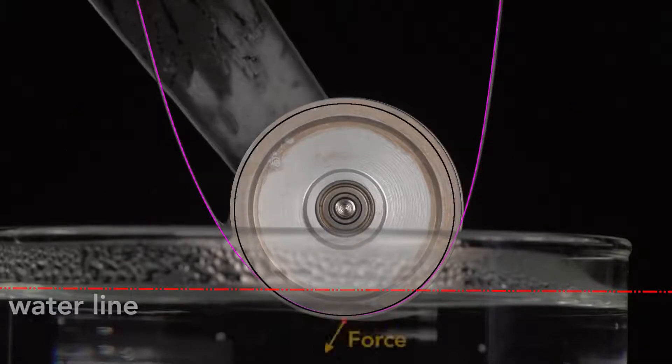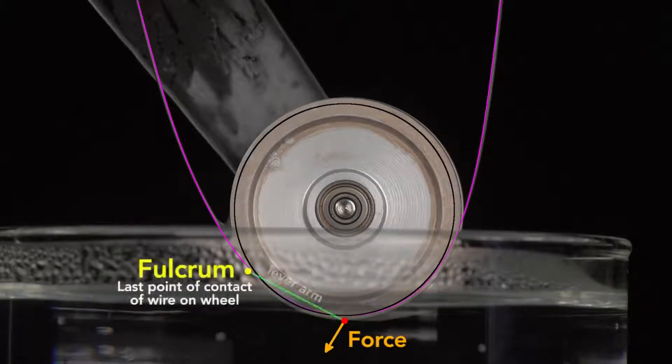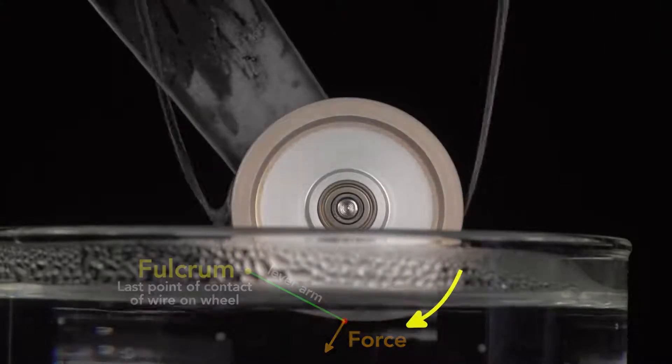This creates a force at this point on the wheel from this fulcrum, which is the last point of contact of the wire on the wheel. This generates a force about the center of the wheel, which is transmitted as torque and sets in motion the engine.